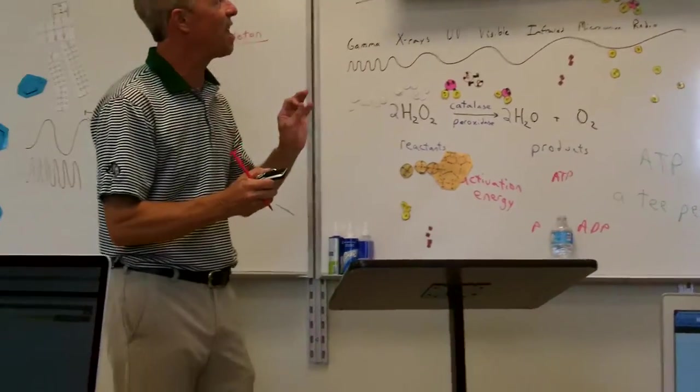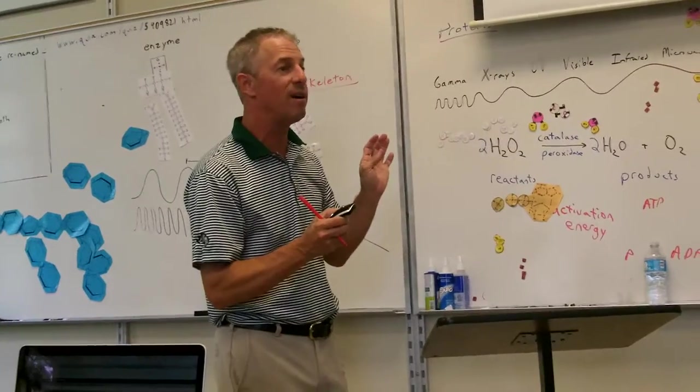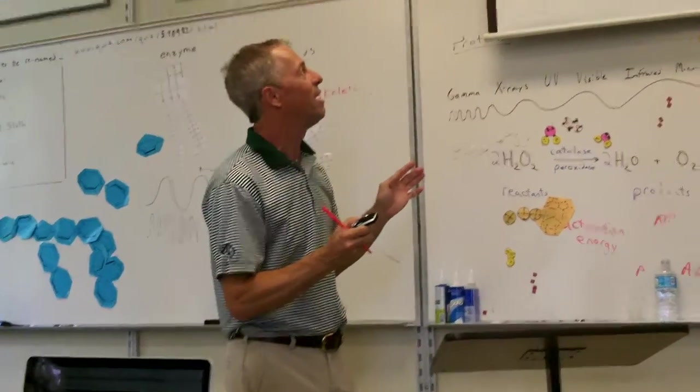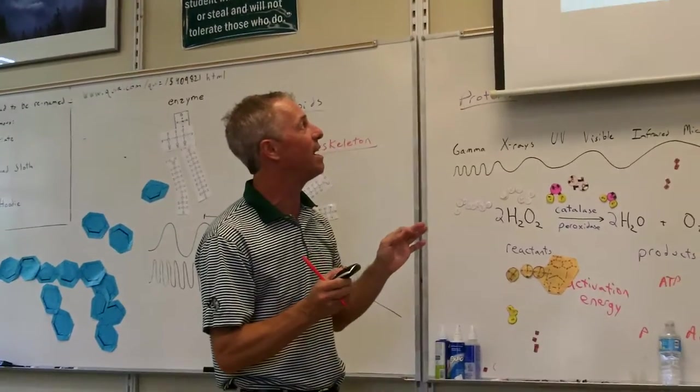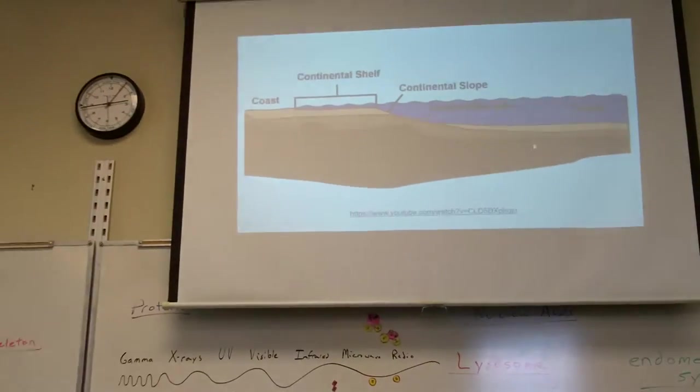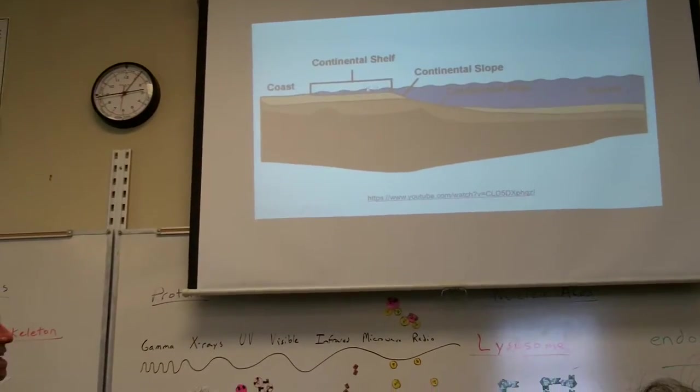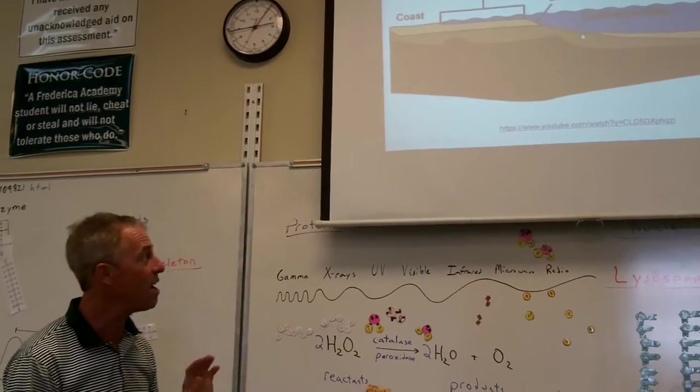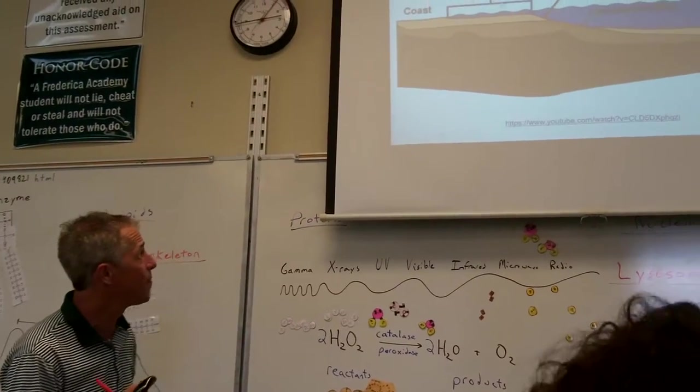So granite is lighter than basalt, so granite sticks up higher. So you don't have it where you just reel high up on granite and then it falls straight down to the basalt. There is a transition zone. Okay? And you need to learn these parts.